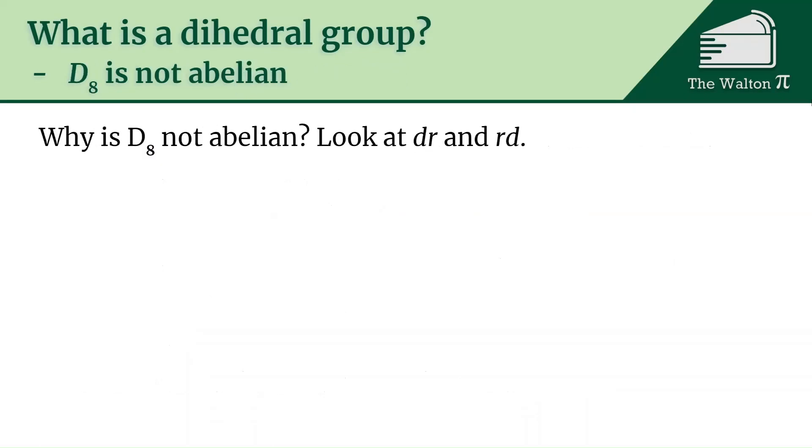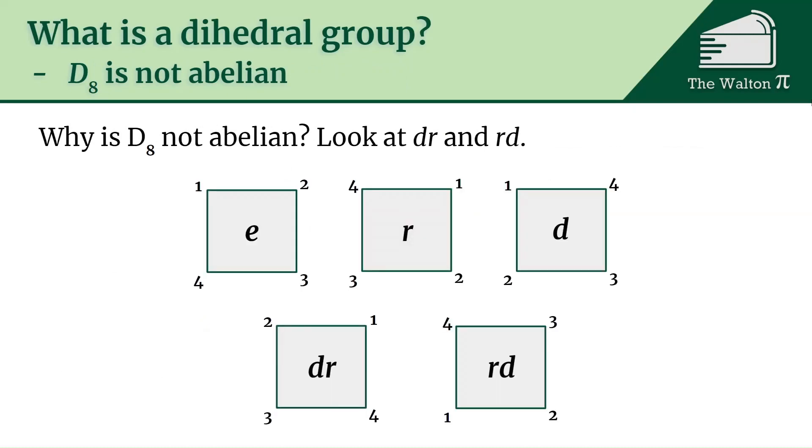Why is D_8 not abelian? We're going to look at dr and rd. If we have e, r, and d, dr is 2143, but rd is 4321. Those are different symmetries, so they are not the same. So the multiplication in this group does not commute.